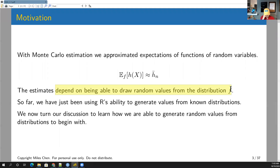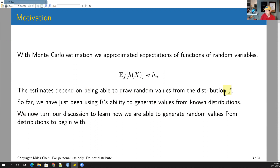Everything we've done so far has depended on R's ability to generate values from known distributions - using r-beta, r-norm, r-gamma, r-pois, and so on. What we're going to look at today is how do we generate values from these distributions to begin with.